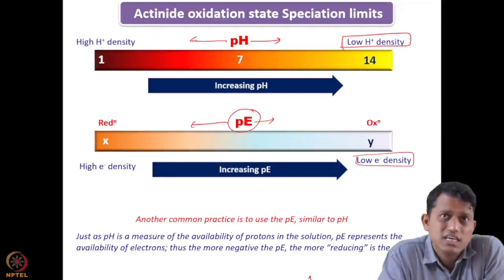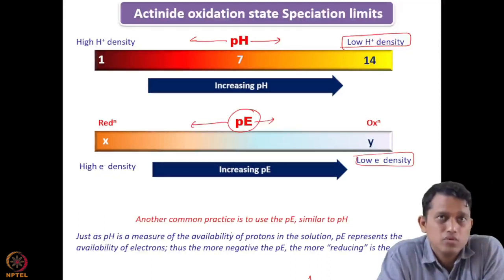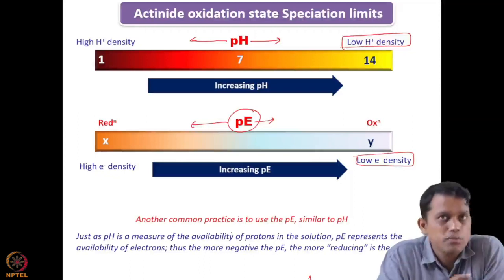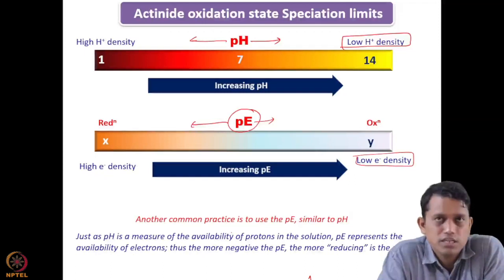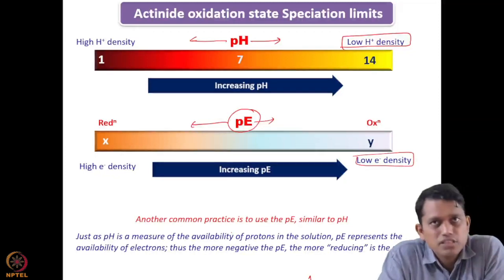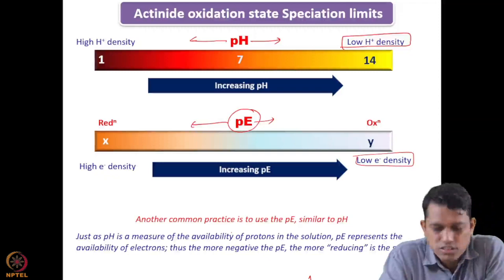With the assumption that there is some variable called PE that tells us about electron availability, it is important to mention that free electrons are not directly available or measurable. We are not directly measuring any concentration of free electrons. Rather, this is a conceptual variable that you can correlate with PE, giving indirect information about whether the system is reducing or oxidizing.